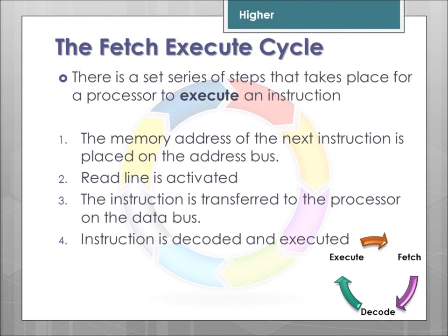The fetch-execute cycle is a set series of steps that have to take place for a processor to execute an instruction. It has to get the address of where the next instruction is going to be, place that on the address bus, activate the read line, and the instruction is transferred to the processor through the data bus, then decoded and executed. This goes around in a constant cycle.